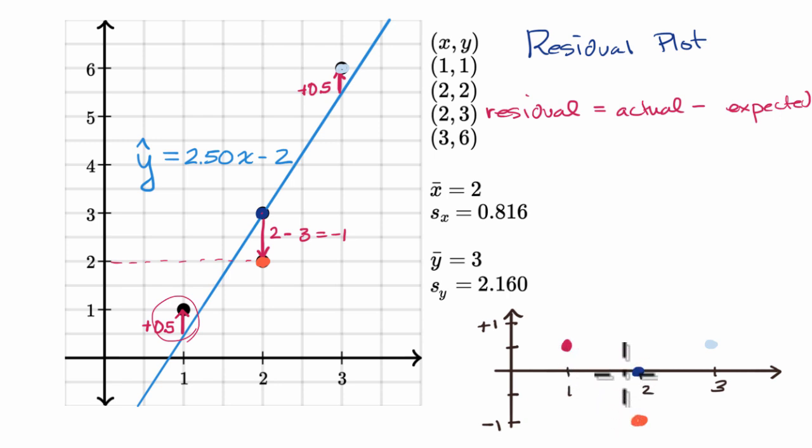The general idea is, if you see the points pretty evenly scattered or randomly scattered above and below this line, you don't really discern any trend here, then a line is probably a good model for the data.